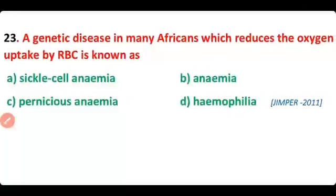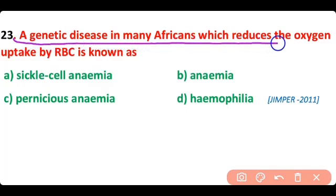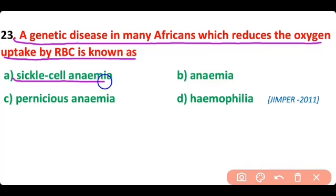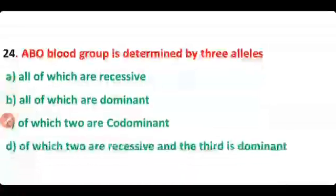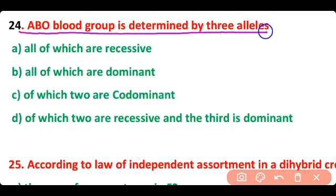Question number 23. A genetic disease which in many Africans reduces the oxygen uptake by red blood cells is known as sickle cell anemia. So correct answer is option A.